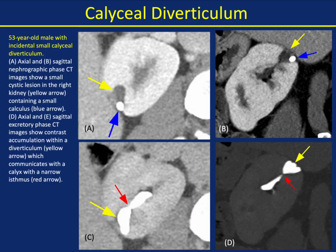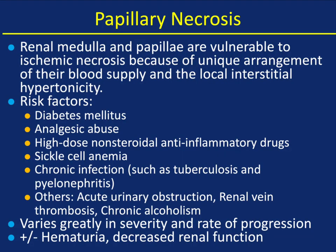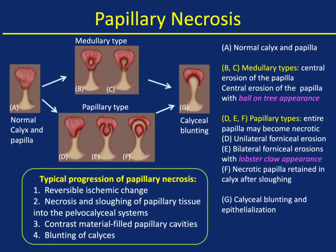The last thing I'll comment on is papillary necrosis. The renal medulla and papilla are vulnerable to ischemic necrosis because of the unique arrangement of their blood supply and local interstitial hypertonicity. Risk factors for papillary necrosis include diabetes, analgesic abuse — commonly high-dose non-steroidal anti-inflammatory drugs — sickle cell disease, infections such as TB or chronic pyelonephritis, acute urinary obstruction, renal vein thrombosis, and chronic alcohol abuse. It varies greatly in severity and rate of progression, and hematuria is commonly present as is decreased renal function.